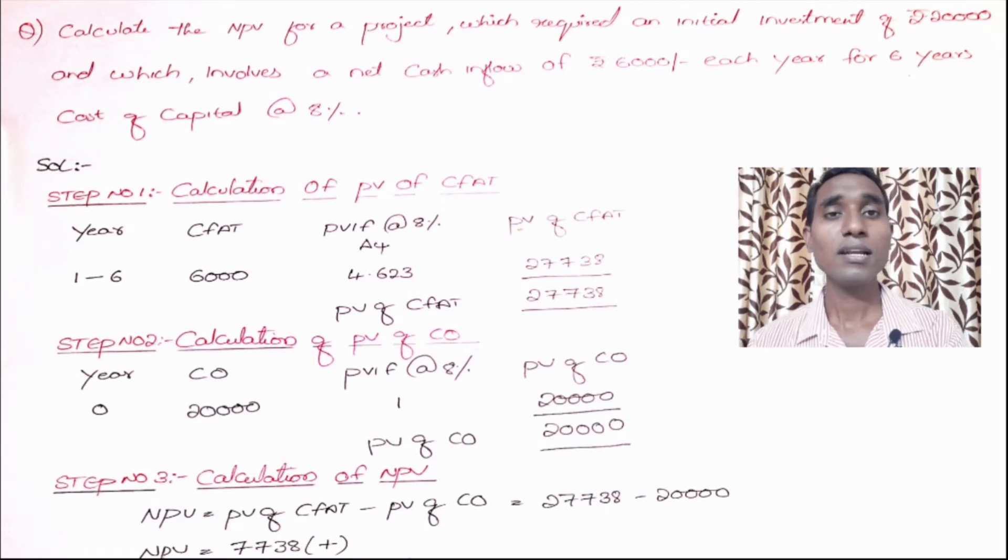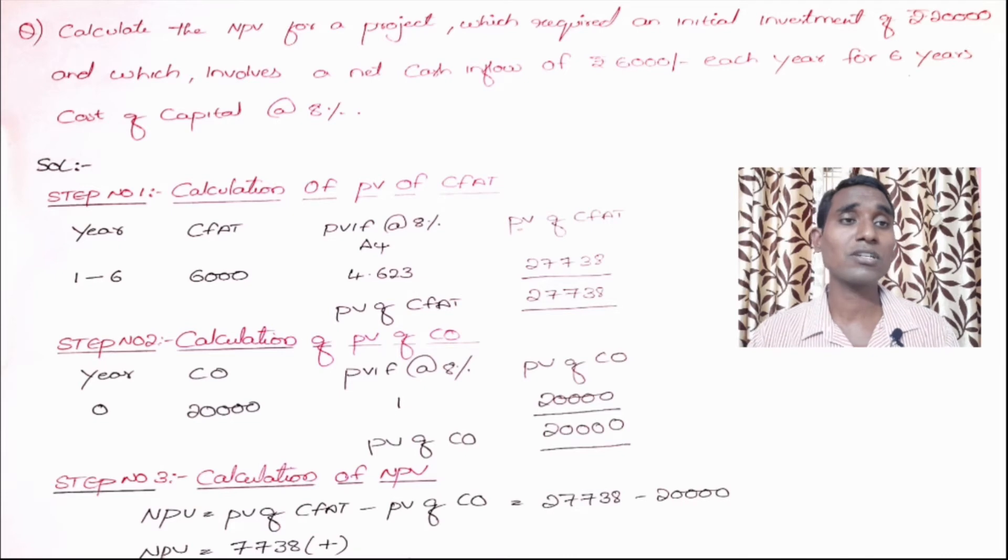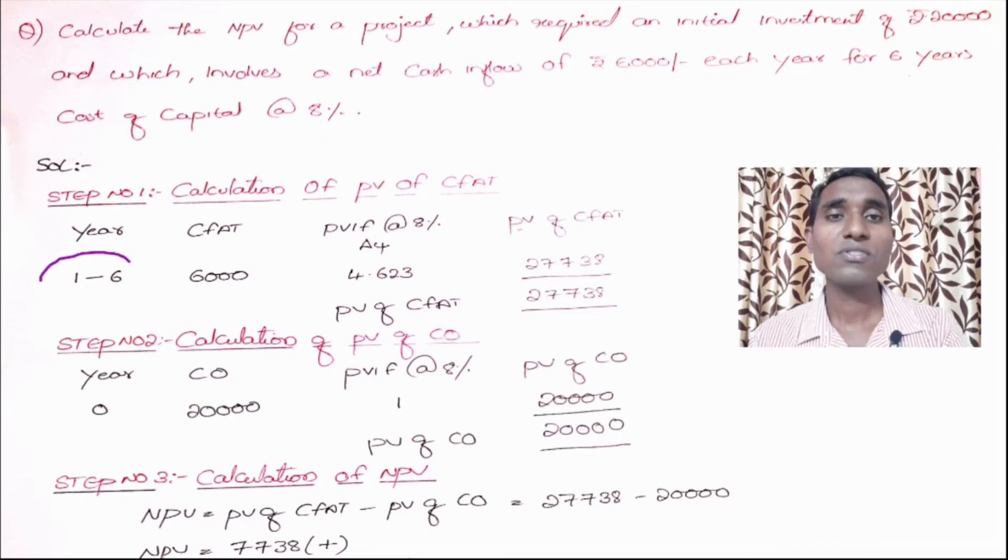Step number one is calculation of PV of cash inflows. In the earlier problem I used to take year one to six where the cash inflows were not constant but different. But here the cash inflows are constant, so I simply took one to sixth year with cash inflows of 6,000.